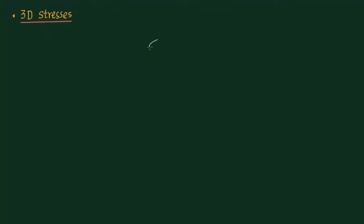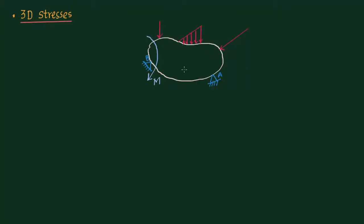Now to begin, I am going to explain the concept of three-dimensional stresses with a simple example. Suppose we have a body of any shape — I am considering an irregular shape. This body is supported at points A and B, and is subjected to various forces: point loads, variable forces, and moments. So there are various types of loads acting on the body. If I take a small square element inside the body, it will be experiencing various forces over its surface.